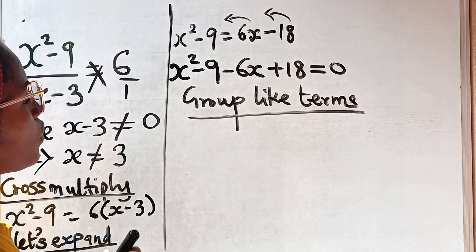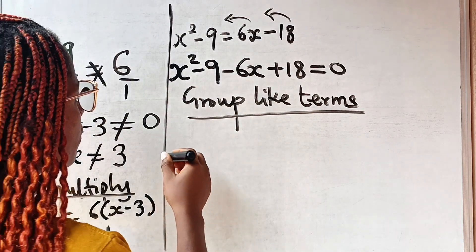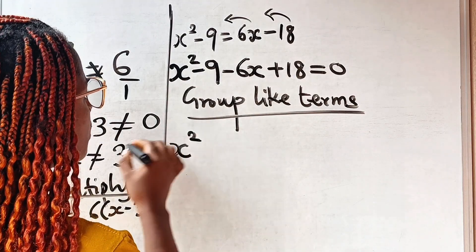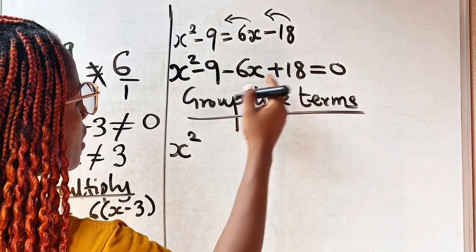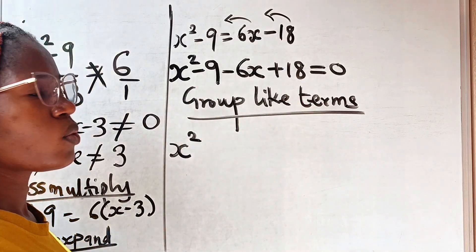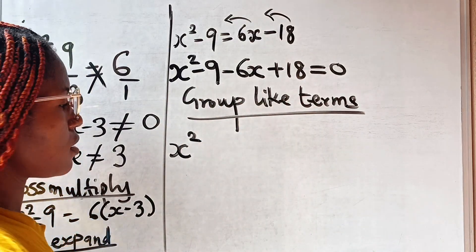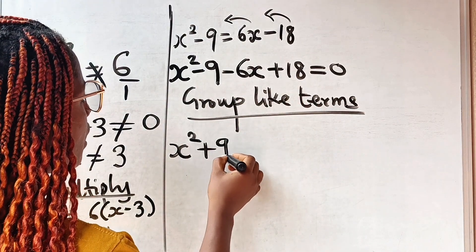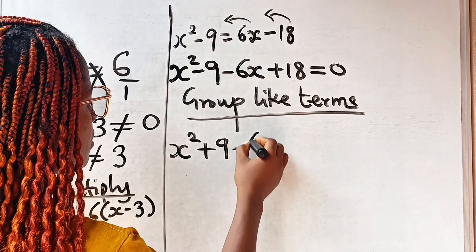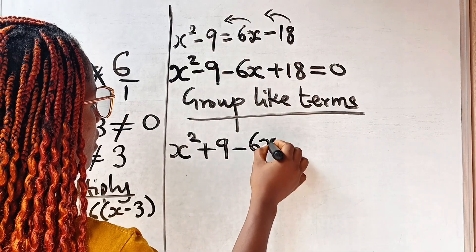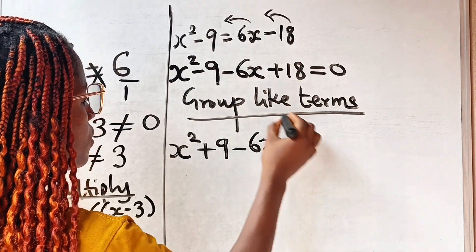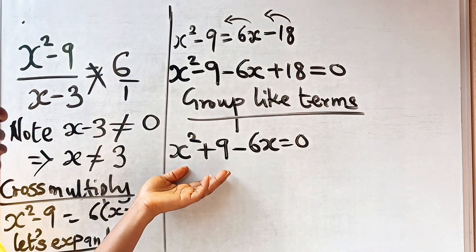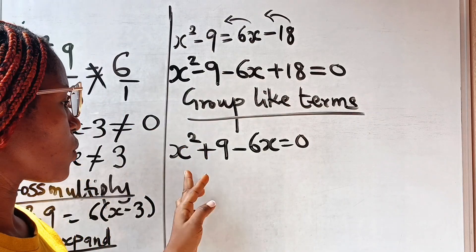Grouping like terms: x squared, then negative nine plus 18 gives us positive nine, and minus 6x, all equal to zero. If you look at this, you can see that this is a quadratic equation.